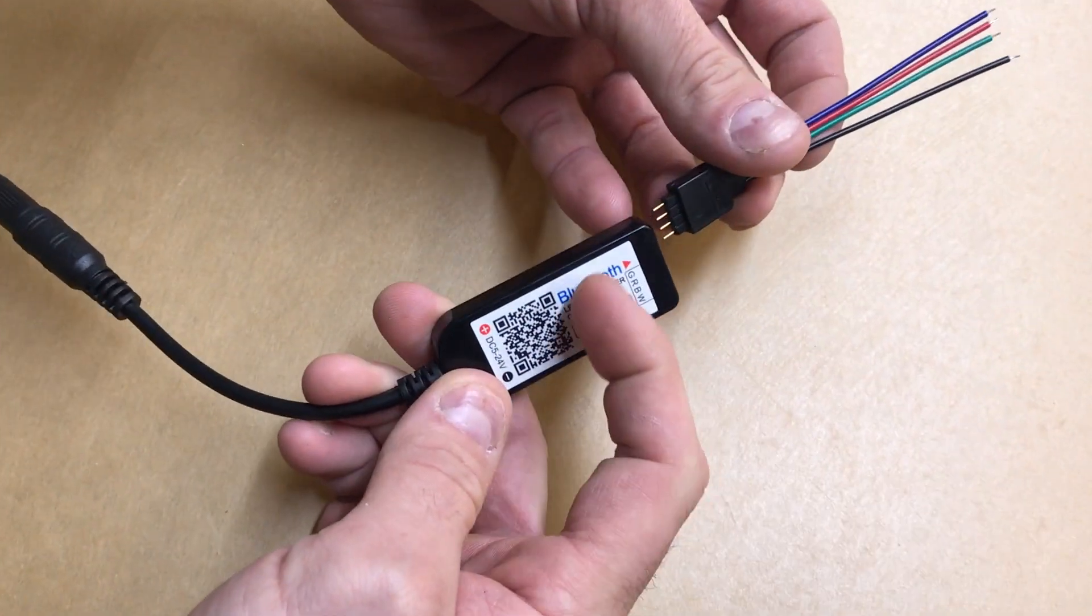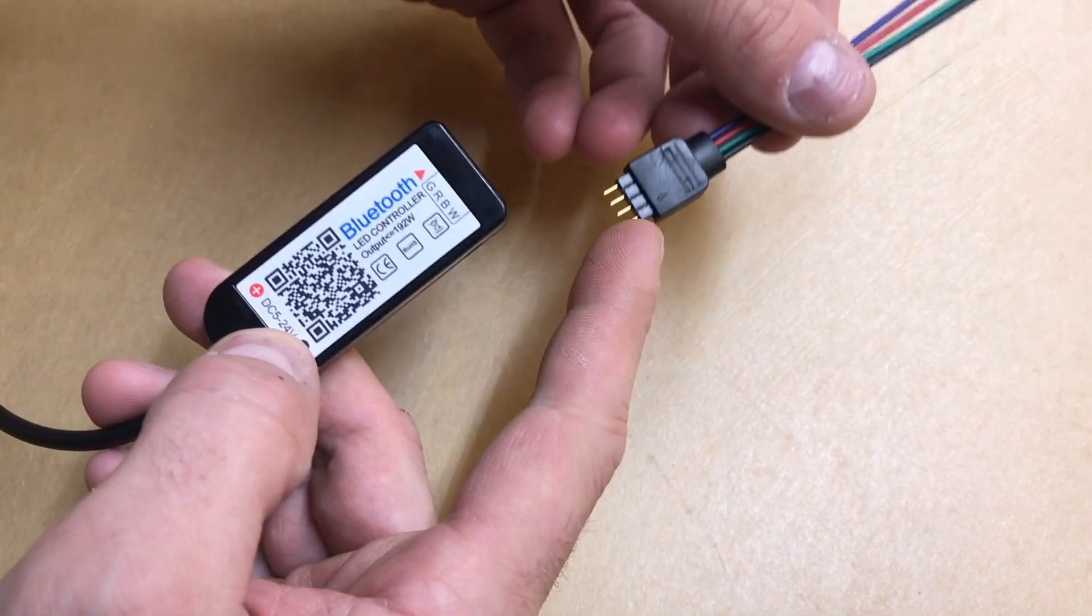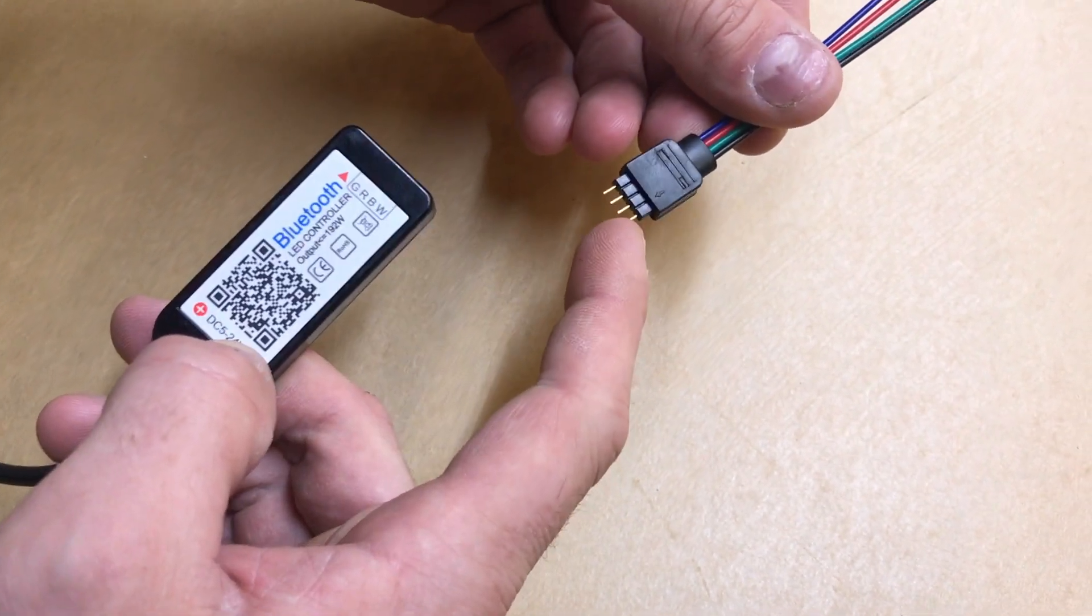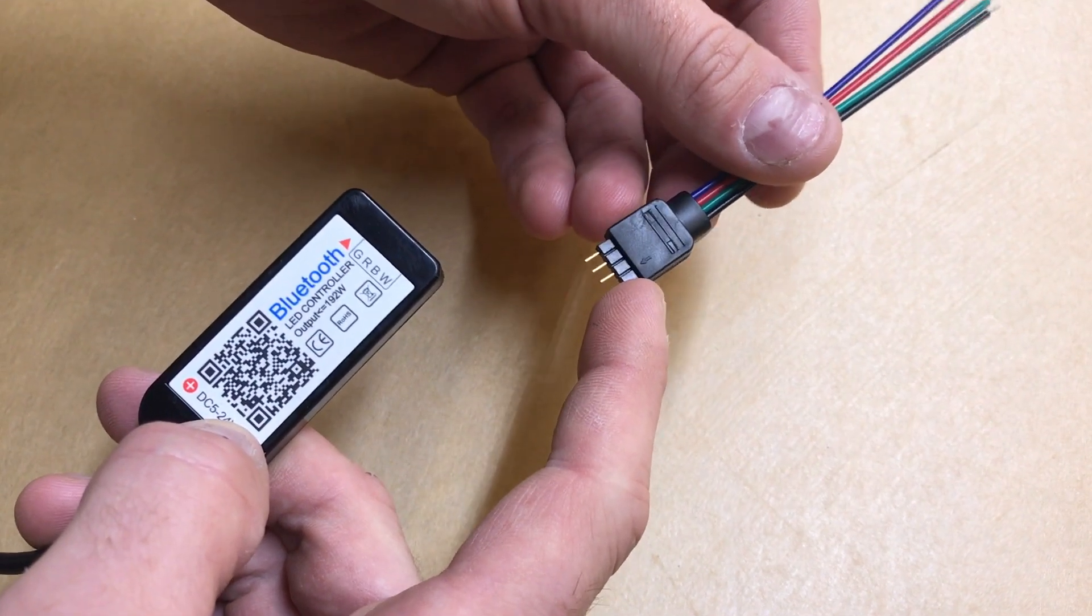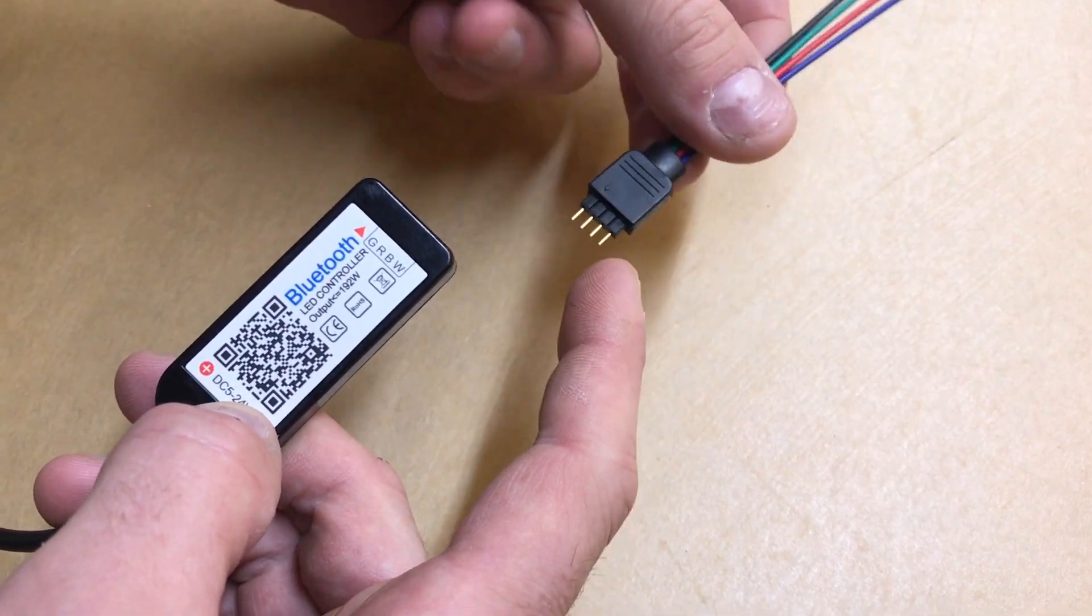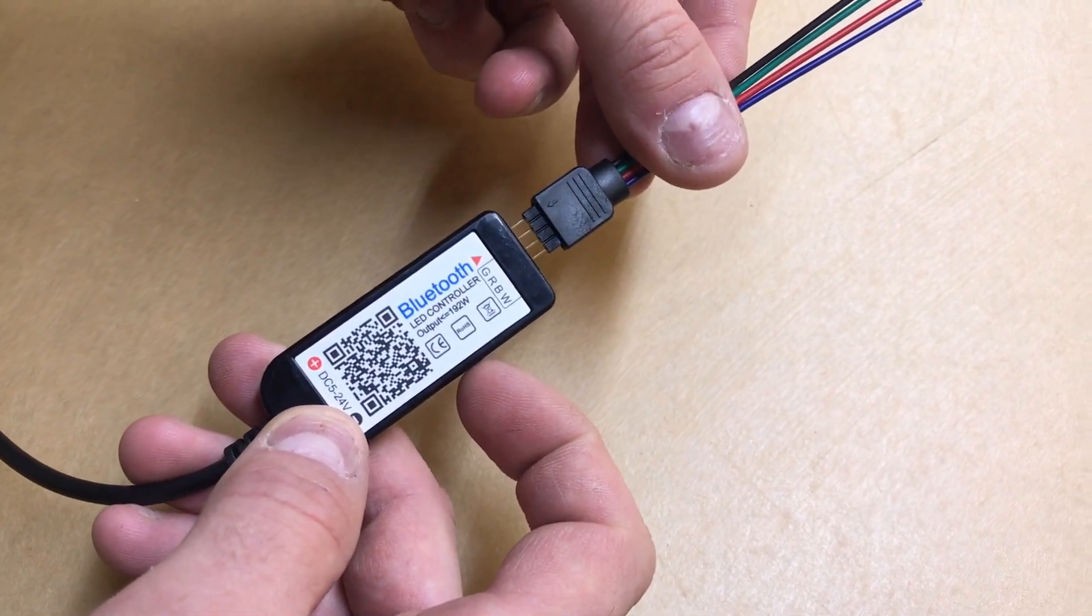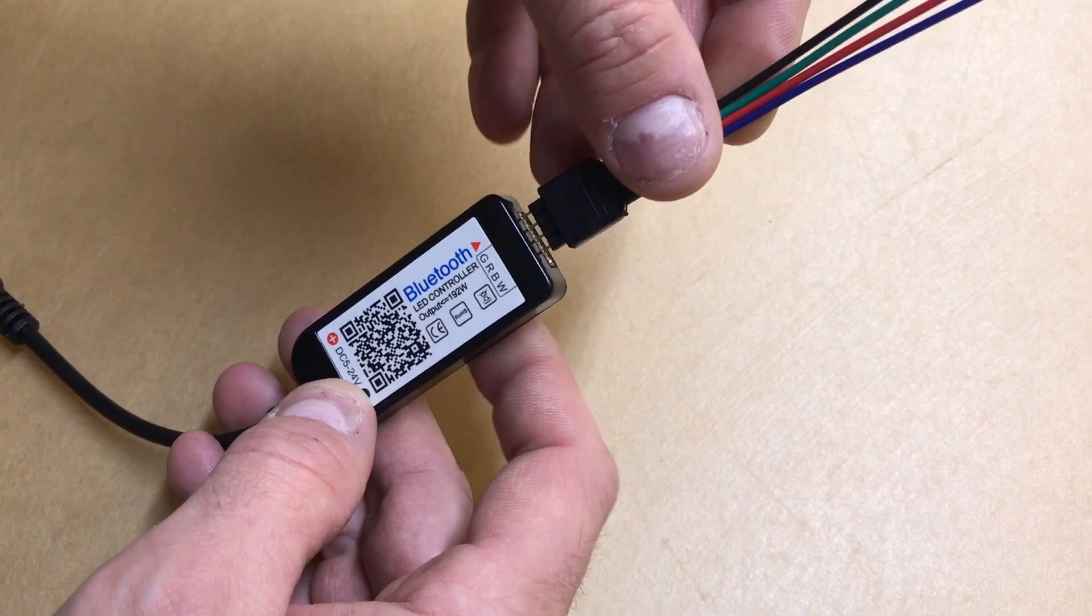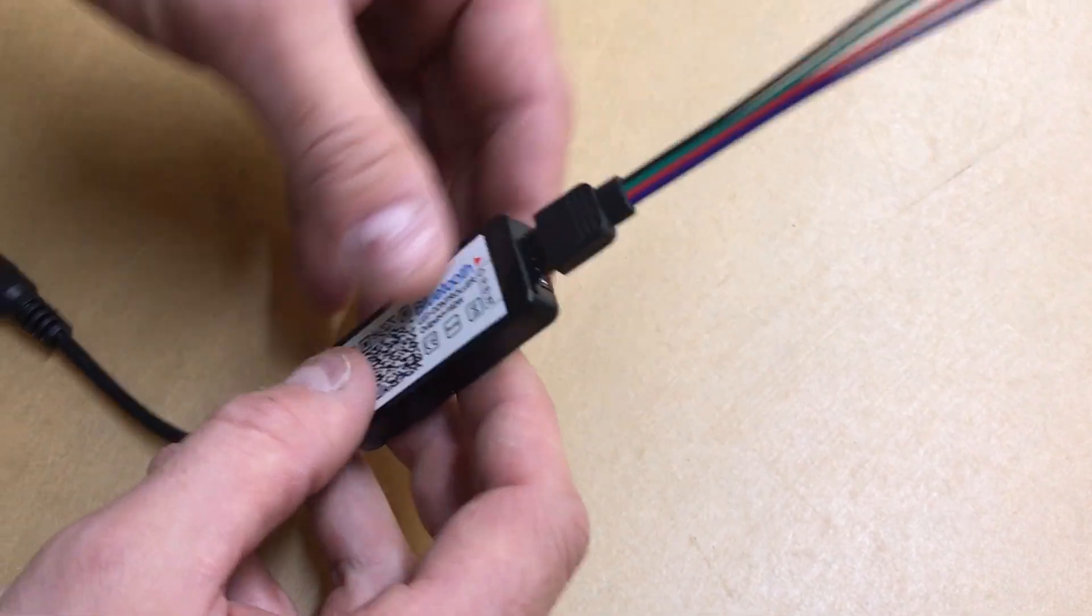There's a little red arrow, as you can see, and that arrow has to correspond with this arrow on the actual connector. In this case it will be like this, so you can see both arrows are lining up and both holes here line up. This particular controller has an extra channel.